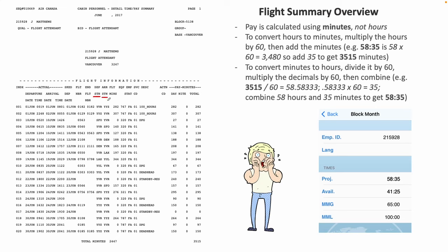Departure station and arrival station are straightforward — that's the airport you depart from and the airport you arrive to. Flight minutes indicates the length of the flight in minutes, and this brings us to an important point: pay is calculated using minutes, not hours. Something to get used to when looking over your flight summary is that everything is listed in minutes, whereas we're used to thinking in hours and minutes — primarily because of Globe Mobile and the desktop version of Globe, where everything is listed in standard hour-minute format.